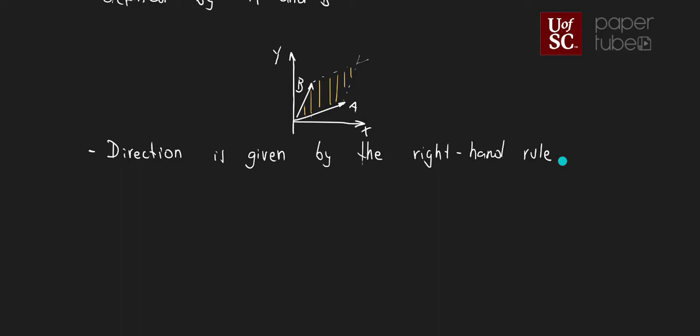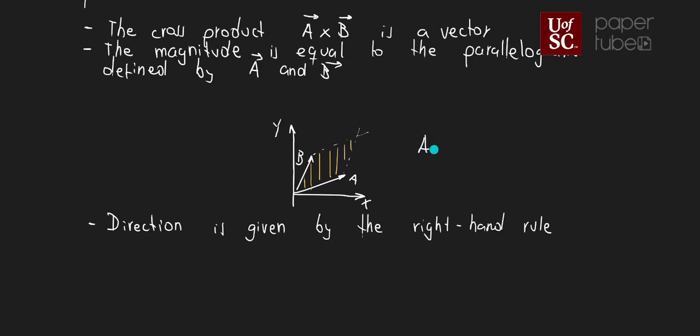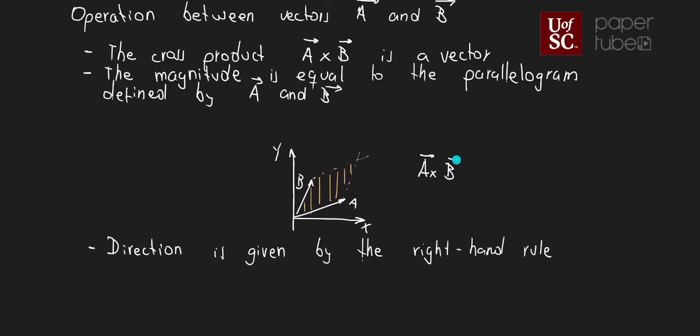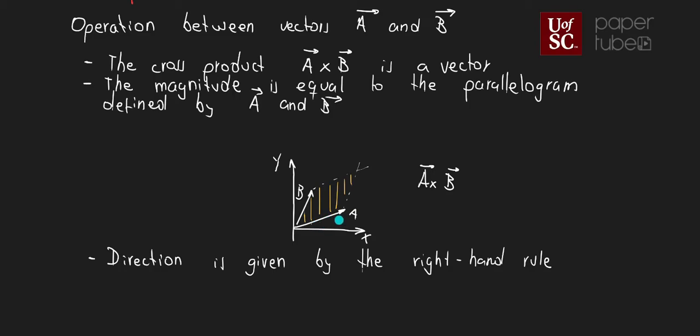If we have a product like this, A cross B, and if you go from the first vector towards the second vector, and you're going counterclockwise, that means that the cross product is going to be out of the plane, coming out of the plane, going up with respect to your screen right now.